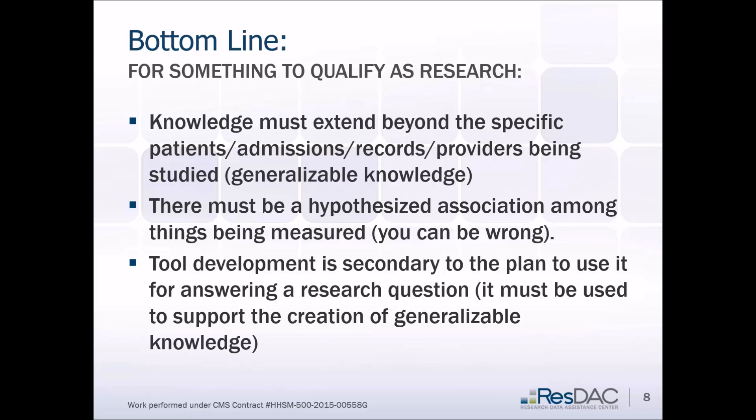So the bottom line: for something to qualify as research, the knowledge must extend beyond the specific being studied — patients, admissions, records, providers. There must also be some hypothesized association among things being measured. You don't have to be right, but you have to say, even very generally, that you think this will vary by urban-rural status, age, gender, race, or comorbidity status. Tool development is allowed, but it has to be secondary to the plan to use the tools for answering a research question.